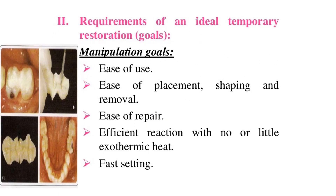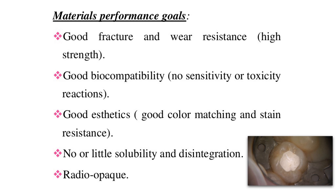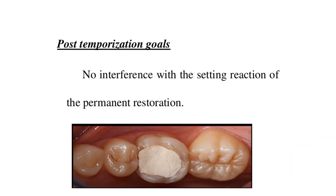Requirements of an ideal temporary restoration — manipulation goals: ease of use, ease of placement, shaping and removal, ease of repair, efficient reaction with no or little exothermic heat, and fast setting. Physiologic goals: protection of both hard and soft tissues, therapeutic actions, sedative and antibactericidal effect, and patient comfort. Materials performance goals: good fracture and wear resistance, high strength, good biocompatibility, no sensitivity or toxicity, good aesthetics, good color matching and stain resistance, no or little solubility and disintegration, and radiopacity. Post-temporization goals: no interference with the setting reaction of the permanent restoration.